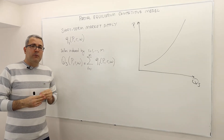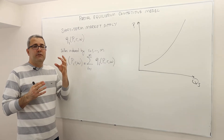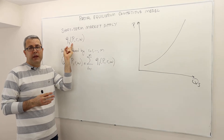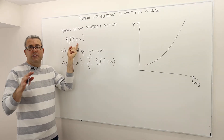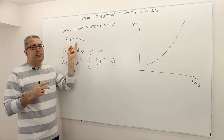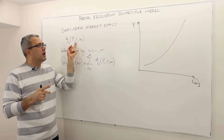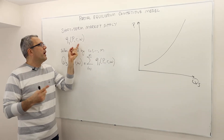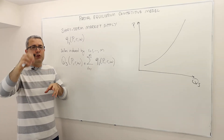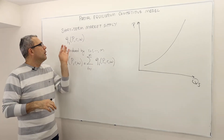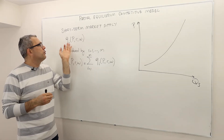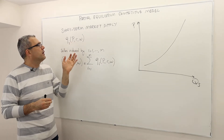Remember from our producer theory: we had a profit-maximizing firm facing a market price P in a competitive market. For simplification, we assumed this firm uses two inputs — capital and labor — with input prices R for rent and W for wage. This profit-maximizing firm is producing some output, so let's assume the individual firm produces QI units of output as a function of market price and input prices.